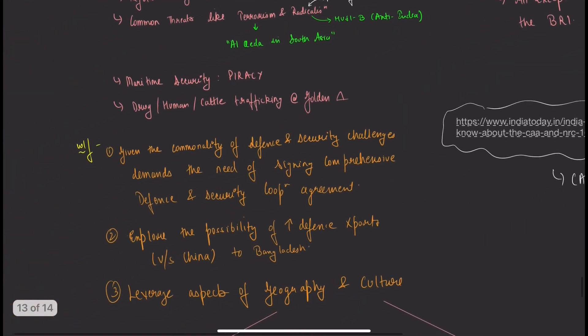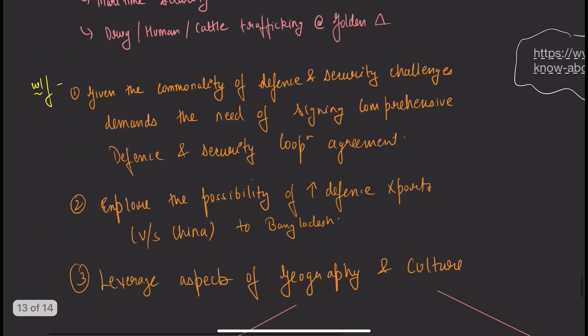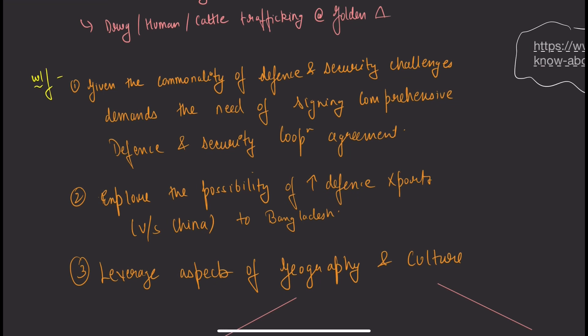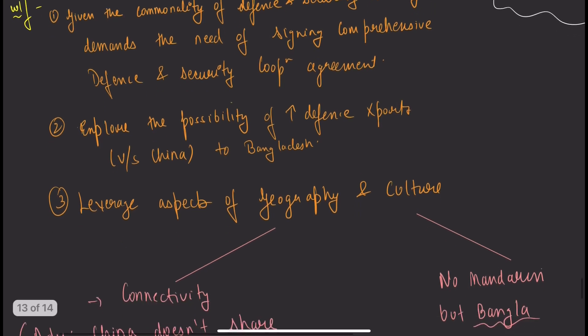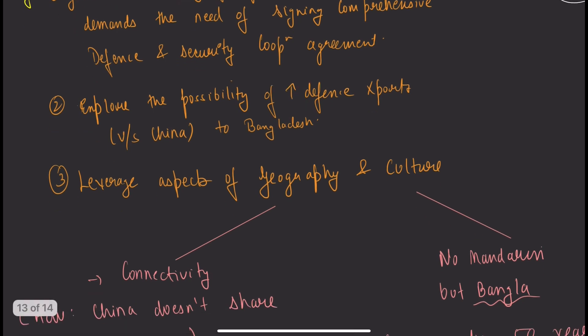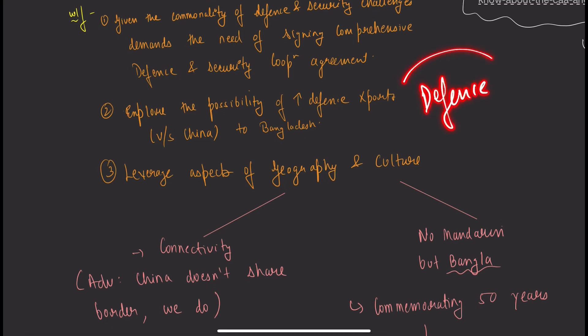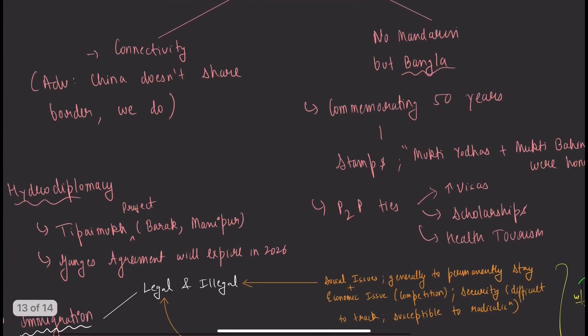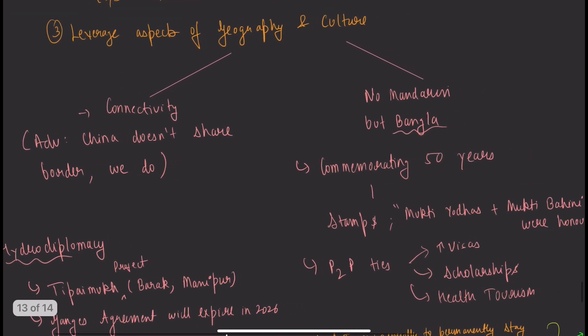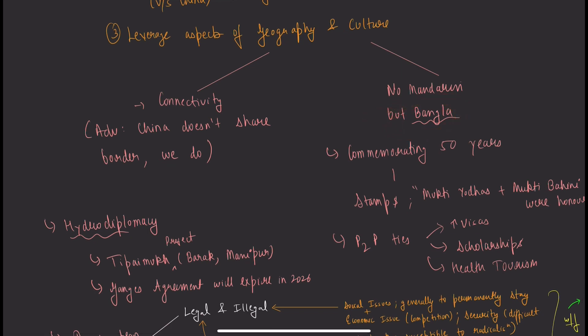The Golden Triangle should be secured. Way forward: given commonality of defense and security challenges, sign comprehensive defense and security cooperation agreement. Explore possibility of increasing defense exports to Bangladesh since China is already exporting. We are modernizing and indigenizing defense. Leverage aspects of geography and culture. China doesn't share borders, but we do, giving us better advantage.